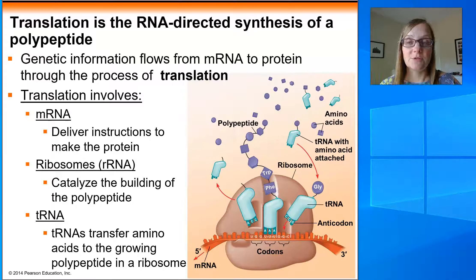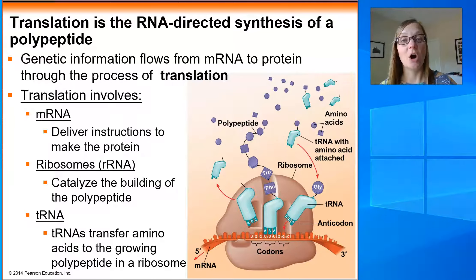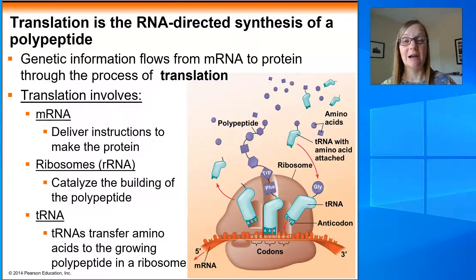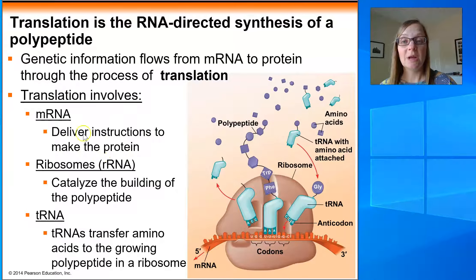This process of translation involves at least three different kinds of RNAs. First, we've got our mRNA — the M stands for messenger. We've just extensively talked about how a cell goes through transcription to create messenger RNA, but its main function is to deliver instructions to actually make the protein.